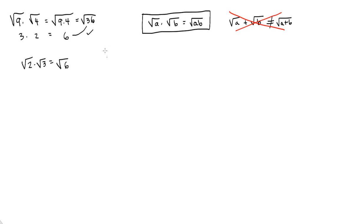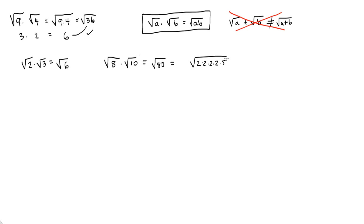Let's look at something a little more complicated. What if I had radical 8 times radical 10? Method number 1 is to go ahead and multiply them together: radical 80. Then simplify — always simplify if you can. 80 is 2 times 40, which is 2 times 2 times 2 times 2 times 5. We pull out a pair of 2s and another pair of 2s, pulling one 2 outside, giving us 4 radical 5.